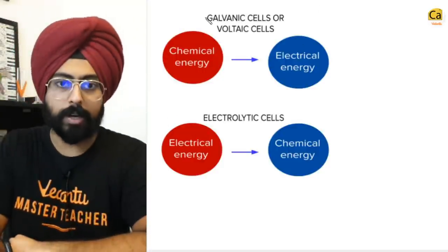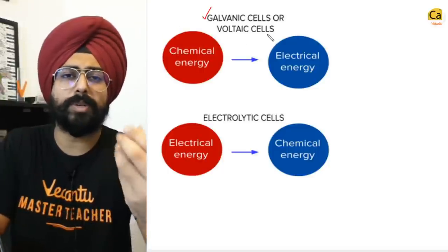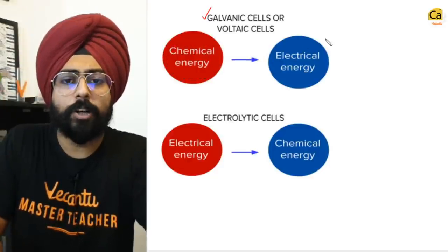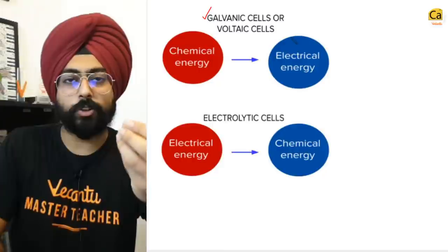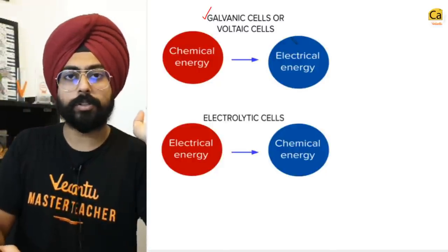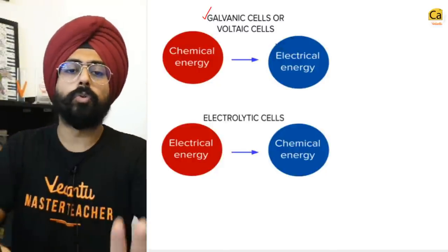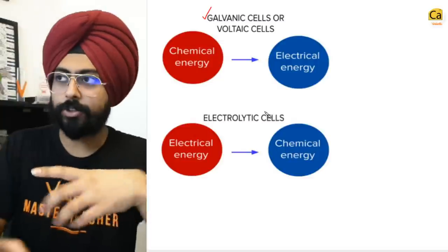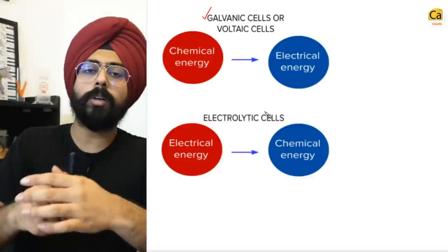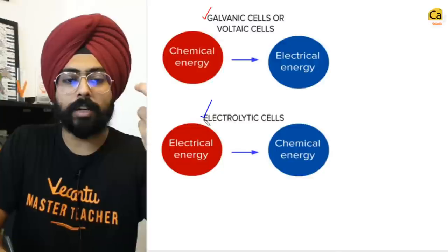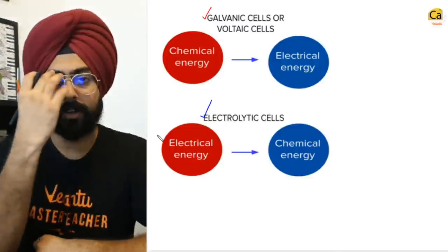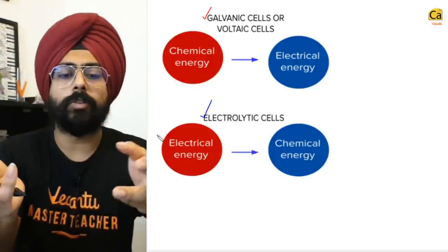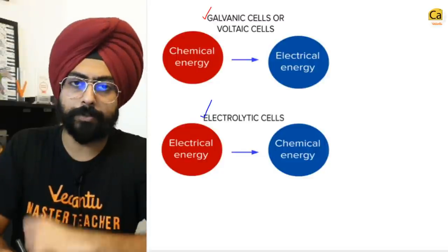Cells can be of two types. One are the galvanic cells or voltaic cells, which are essentially the batteries we use every day. They convert chemical energy into electrical energy. Whatever is happening in your cell phone when you are using it is a galvanic cell process. If you are charging that battery, you are taking electrical energy and converting it back to chemical energy — those are known as electrolytic cells. Reversible batteries, also known as secondary cells, are both galvanic and electrolytic depending on their application.